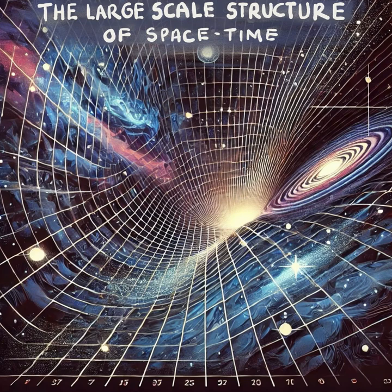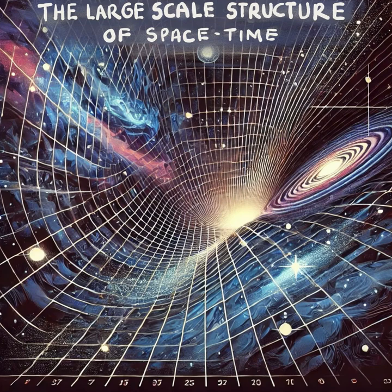We can't talk about singularities without talking about how they warp space-time around them, and that brings us to geodesics. Shortest distance between two points — usually we think straight line, right? That works in our everyday world. But gravity, especially strong gravity, curves space-time, and those shortest paths, those geodesics, become curved too. Figure 2 really shows this, with a focal point messing with what we think of as the shortest route. It's like taking a detour around a mountain instead of climbing over it, even if it seems longer on the map.